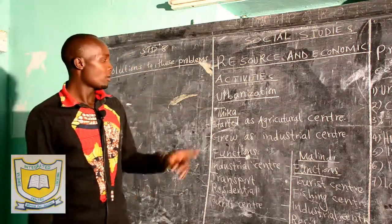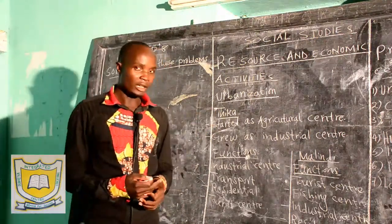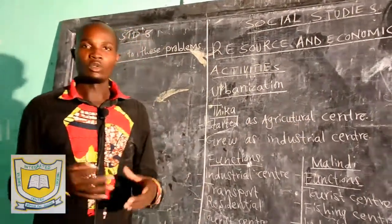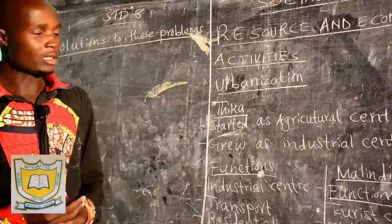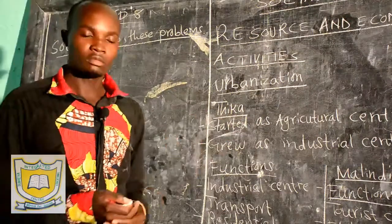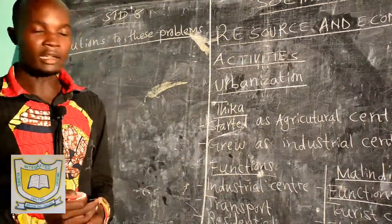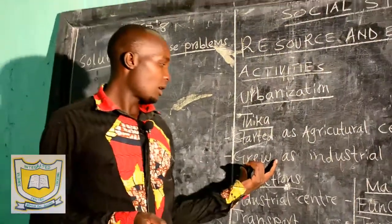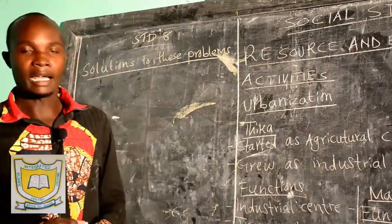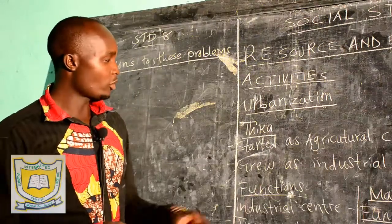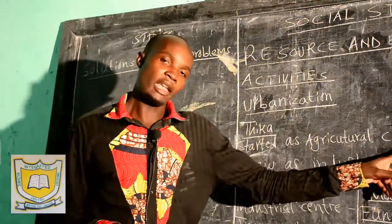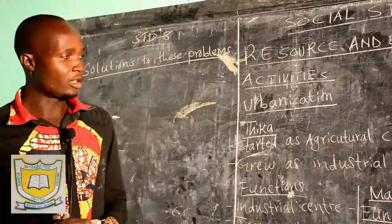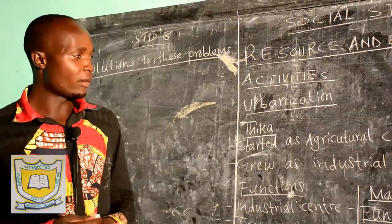So we want to look at Thika. Thika started as an agricultural center — it was a place where European farmers used to settle, and around that area we have very rich agricultural land. However, Thika grew as an industrial area. So it started as an agricultural area but grew as an industrial area, and you should note that Thika has very many industries.